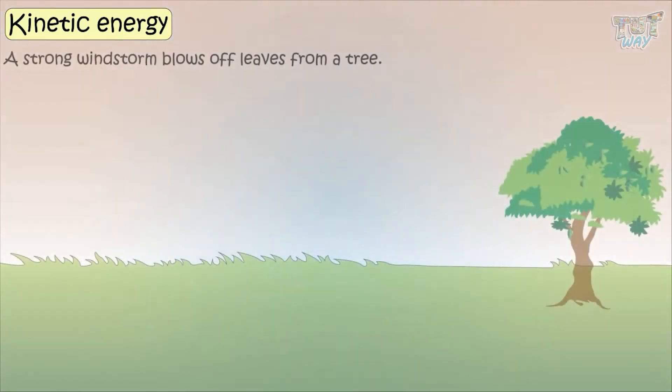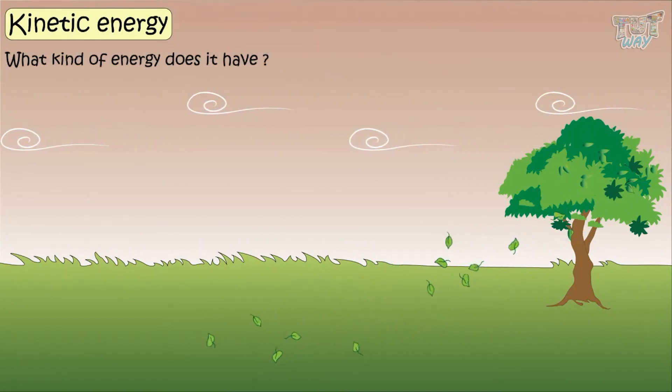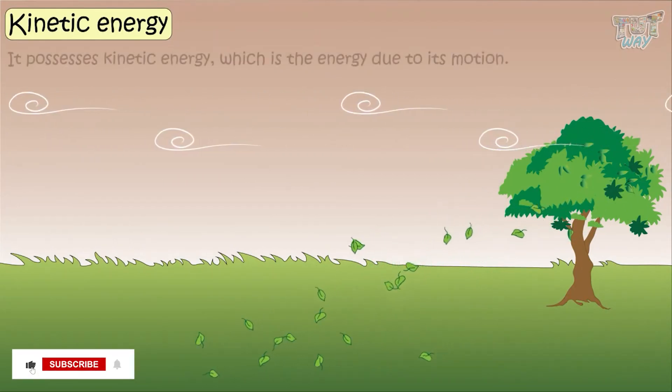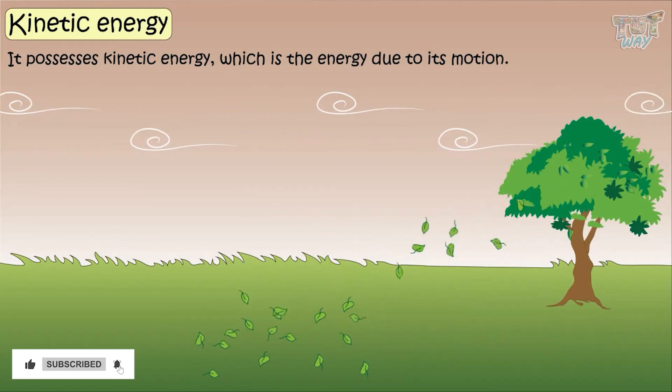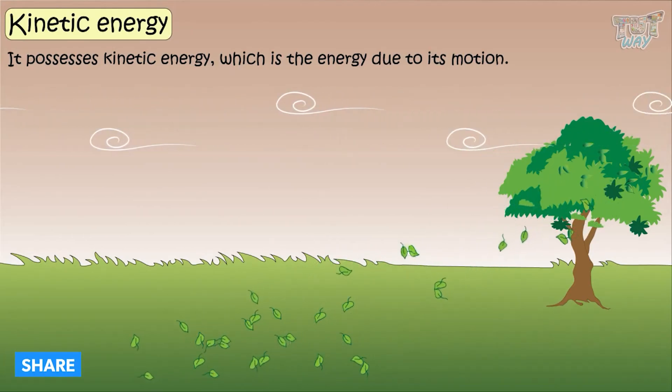A strong windstorm blows off leaves from a tree. What kind of energy does it have? It possesses kinetic energy, that is, energy due to its motion.